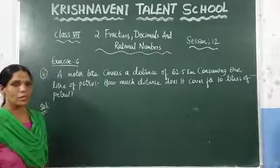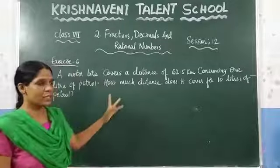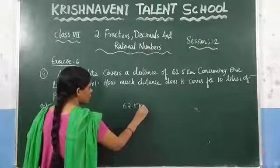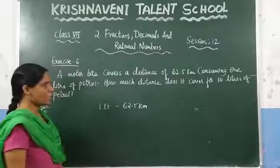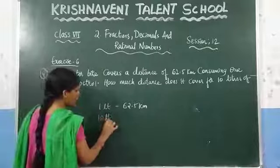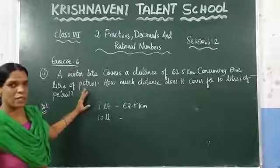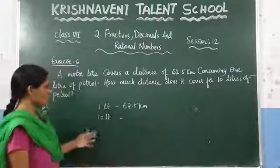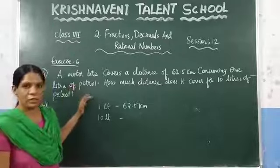This is a very easy problem. The motorbike travels a distance of 62.5 km by using 1 liter of petrol. Now you need to find the total distance if you take 10 liters of petrol — how much distance the motorbike travels. You just need to multiply these two values to get the distance with 10 liters of petrol.